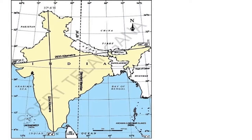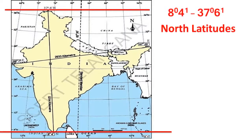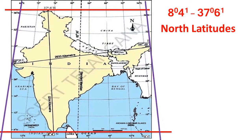India is located in the northern hemisphere between 8 degrees 4 minutes to 37 degrees 6 minutes north latitudes and 68 degrees 7 minutes to 97 degrees 25 minutes east longitudes.